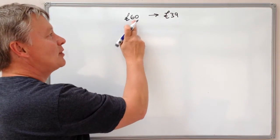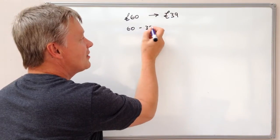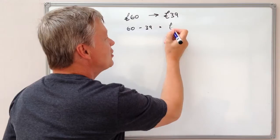So the difference is between 60 and 39. In other words, 60 minus 39, so it's actually been reduced by £21.